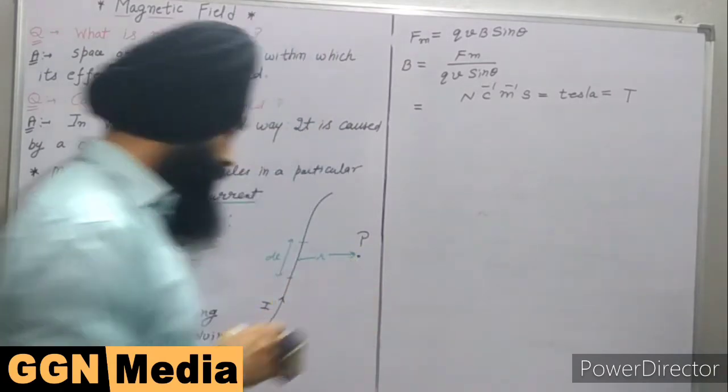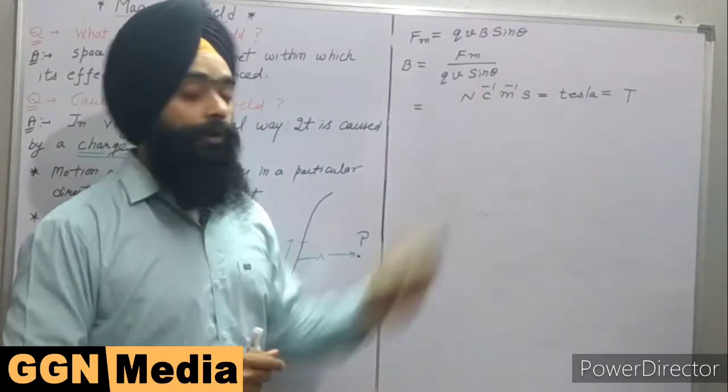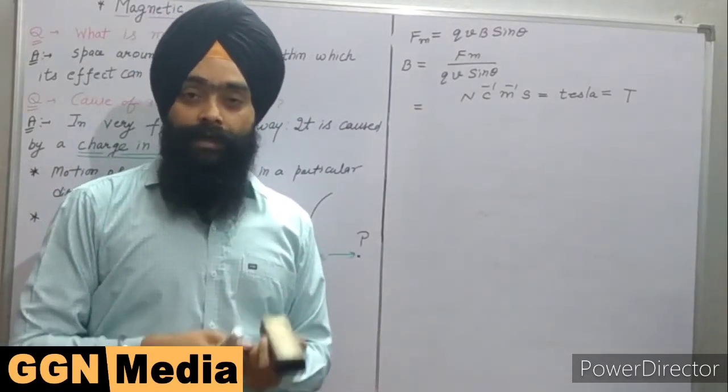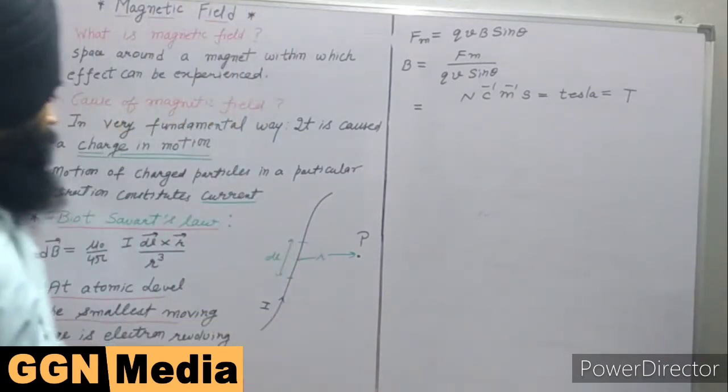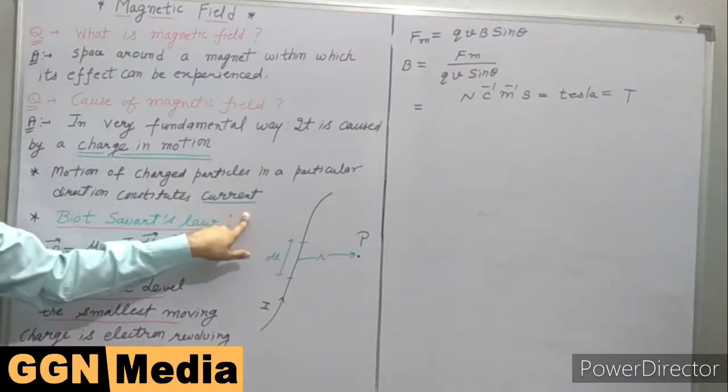Let us come to another point. This is the force on a charge moving with velocity v. If more than one charges are collectively moving in one direction, that is called current. So the motion of a charged particle in a particular direction constitutes a current.